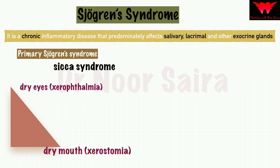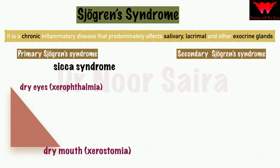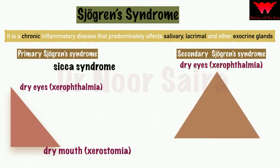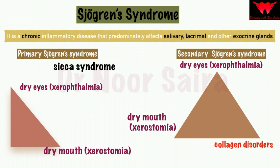The second type is secondary Sjögren's syndrome. Similar to primary, it consists of xerophthalmia and xerostomia. The key difference is the presence of collagen disorders, especially systemic lupus erythematosus or rheumatoid arthritis. So the only difference between primary and secondary Sjögren's syndrome is the presence of these collagen disorders.